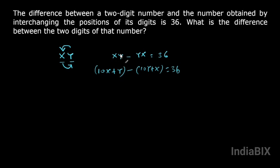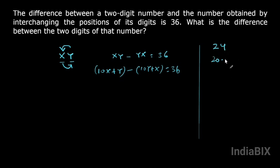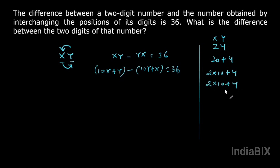Let us see why we write xy as 10x plus y. Suppose the number 24 — we can write 24 as 20 plus 4, and 20 as 2 into 10 plus 4. Here 2 is x and 4 is y, so 2 into 10 plus 4 is 10x plus y. We can write any two-digit number in this form. So xy becomes 10x plus y, and yx becomes 10y plus x.